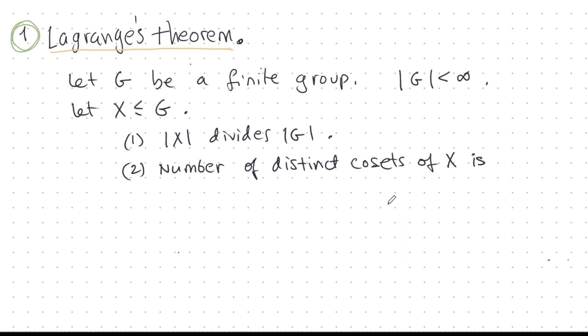Lagrange's theorem says that the number of distinct cosets, it doesn't matter if it's left or right, choose one. The number of distinct cosets of X is the order of G divided by the order of X. That's very beautiful. We'll look at an example of that later. So this is a very beautiful and significant result that everyone should know.